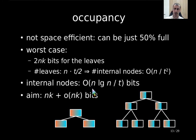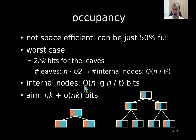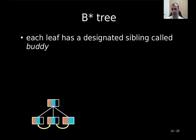Our aim is to get rid of this factor of 2 and get down to nk plus a low-order term of nk. To make the internal nodes contribute only a low-order term, we need to increase the capacity of the leaves. To get rid of the factor of 2, we use the technique from the B-star tree. In the B-star tree, each leaf has a designated sibling called a body.